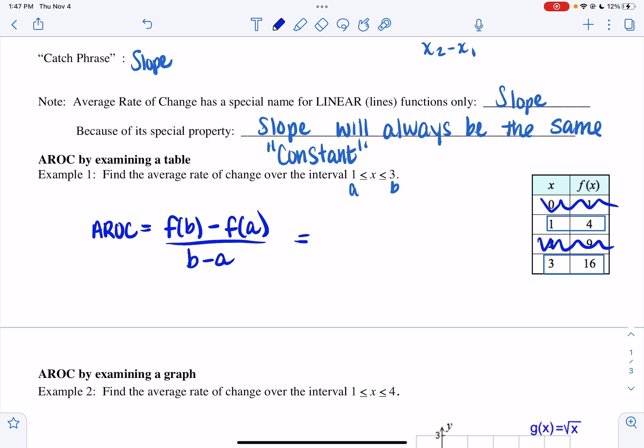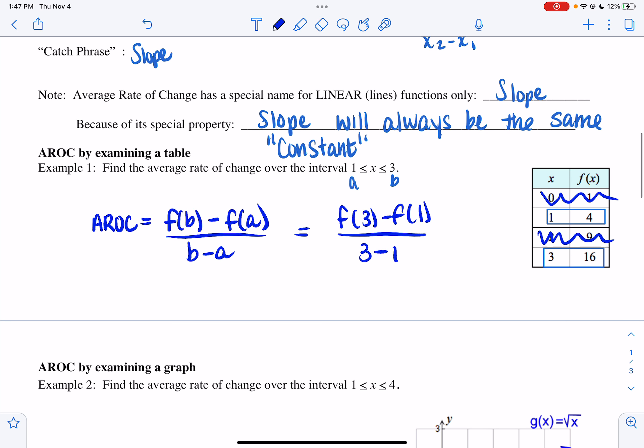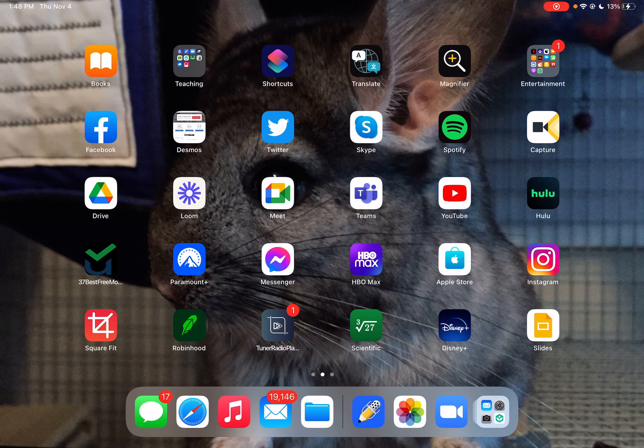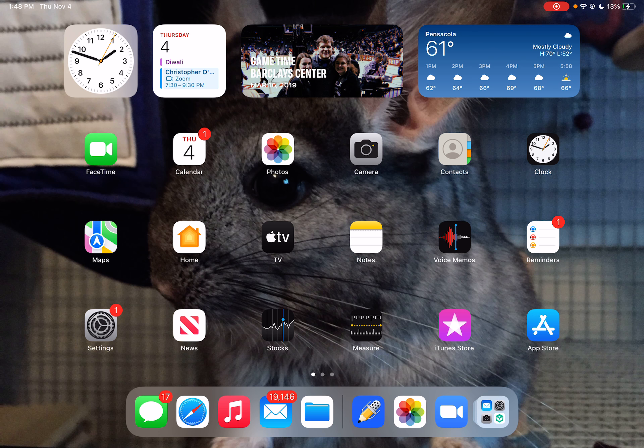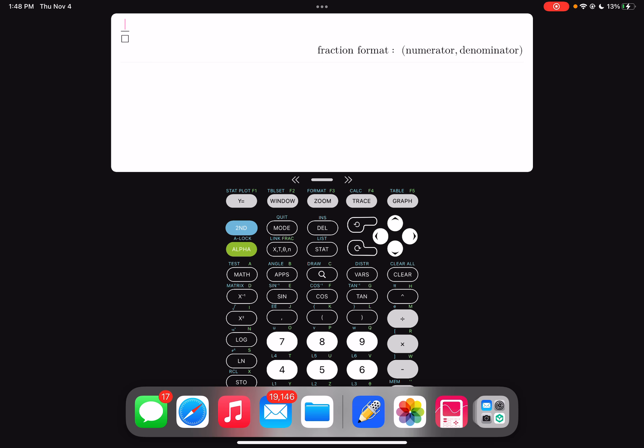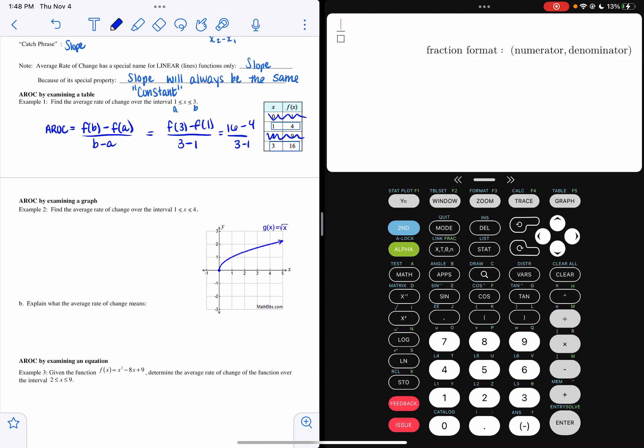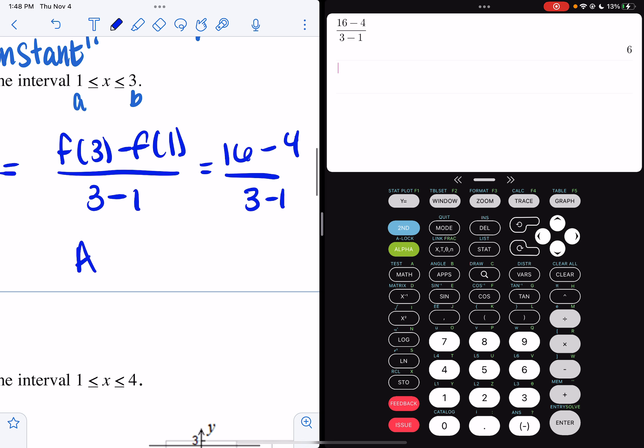How that would look is you substitute your b and your a, so I'd have f of 3 minus f of 1 over 3 minus 1. So when I plug in 3, I get 16. When I plug in 1, I get 4. And now I have 3 minus 1. What we're going to do is we're going to type that into our calculator. So we're going to hit alpha y equals enter, and I'm going to have 16 minus 4 over 3 minus 1. When I hit enter, I get 6. So I can say my AROC is equal to 6, and that's my final answer.